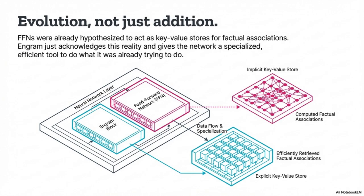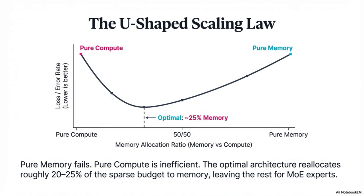The most surprising data point: if this is just a fancy lookup table for facts, why did they see gains on complex reasoning, code, and math benchmarks? That's where their ISO-bounded test is so important. They took the MOE 27B baseline, cut the number of experts from 72 down to 55, and used those freed parameters — about 5.7 billion of them — to build the Enneagram module. Total size and training FLOPs stayed exactly the same. They traded thinking power for memory power, and still saw improvements across the board.